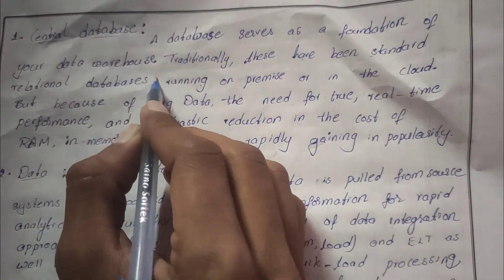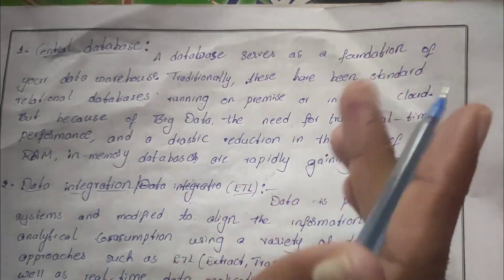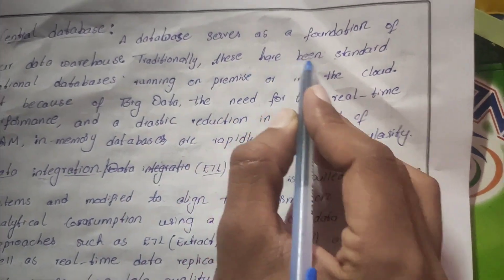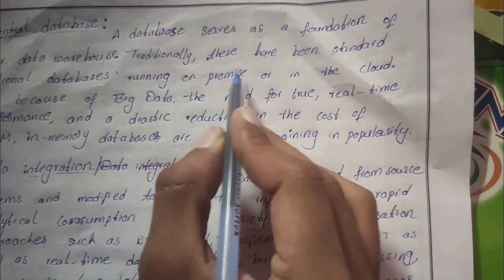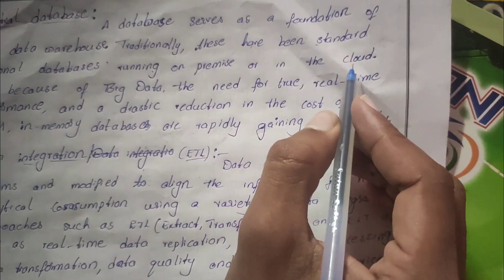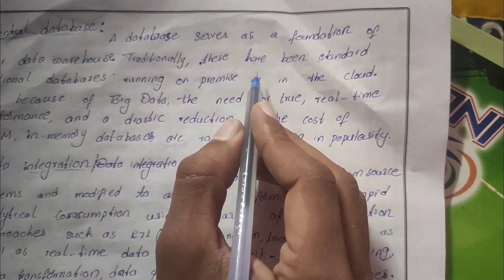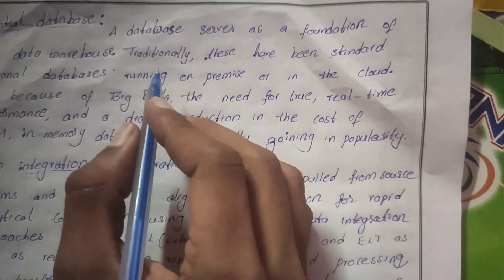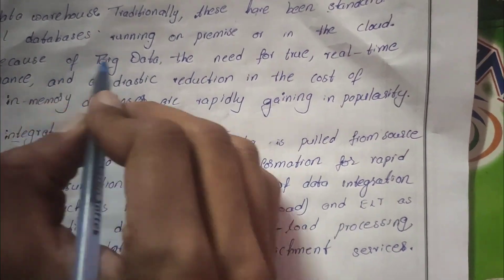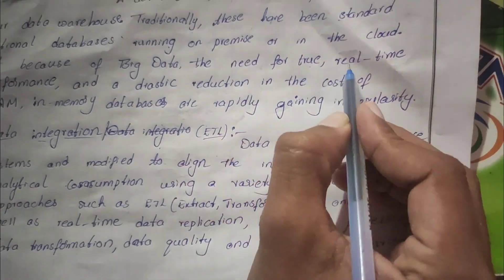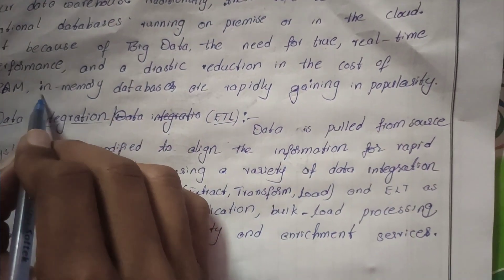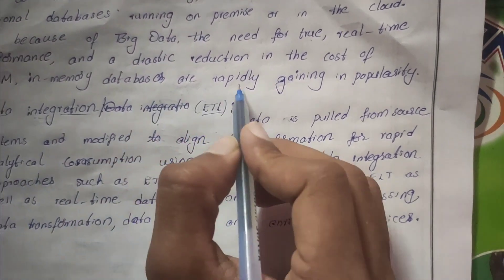The central database serves as a foundation of your data warehouse. Traditionally these have been standard relational databases running on-premises or in the cloud. But because of big data and the need for real-time performance, and a drastic reduction in the cost of RAM, in-memory databases are rapidly gaining in popularity.